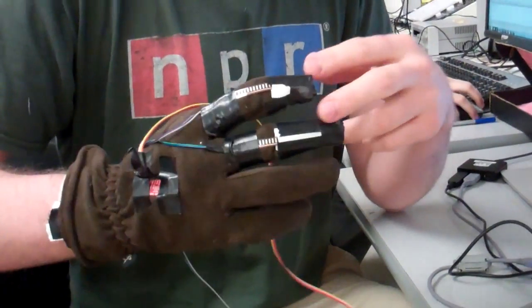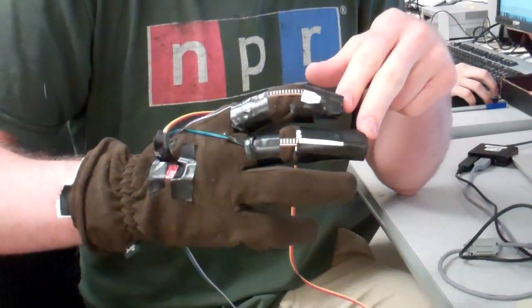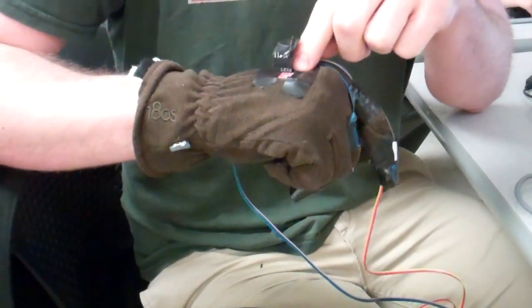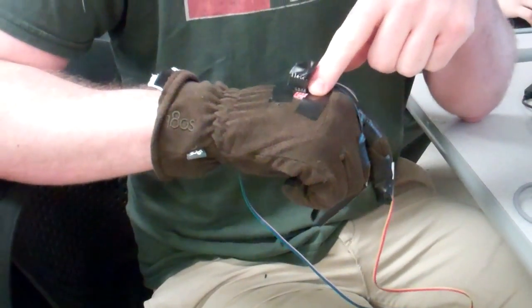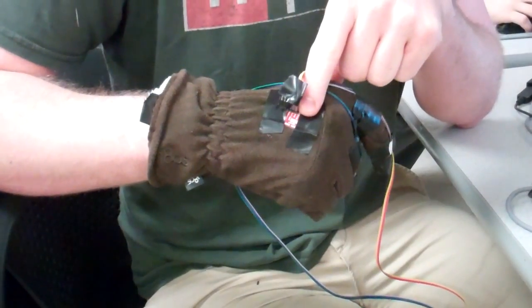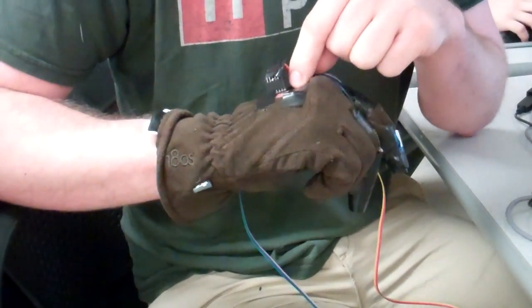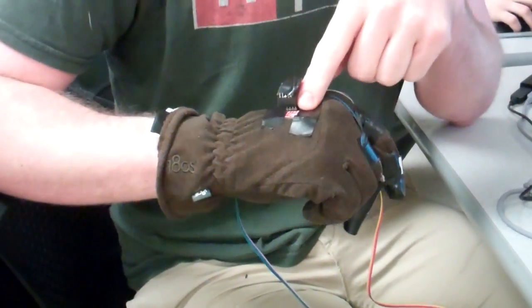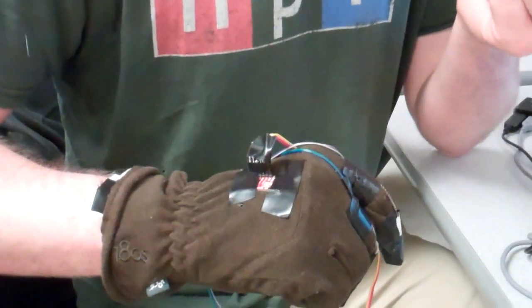So here we have two flex resistors hooked up on the pointer and middle fingers, and then we have an IMU, it's a little taped. IMU stands for inertial measurement unit. So on this chip is a gyroscope, an accelerometer, and a magnetometer. We're only using the gyroscope and accelerometer.